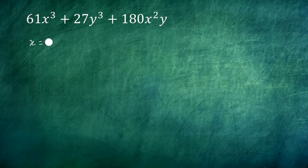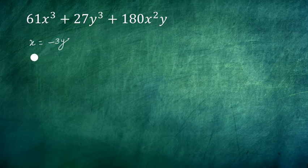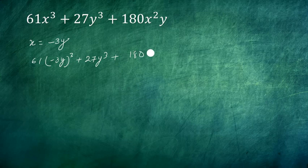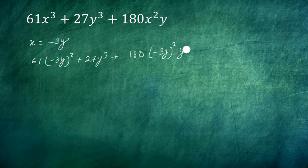So let's see what is happening. This expression will be 61 into (-3y)³ plus 27y³ plus 180 times (-3y)² times y.